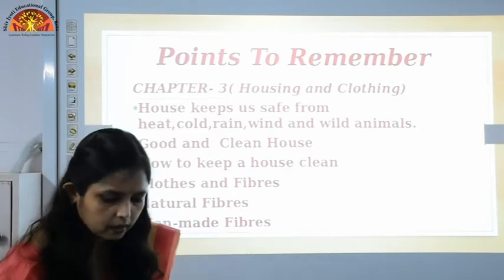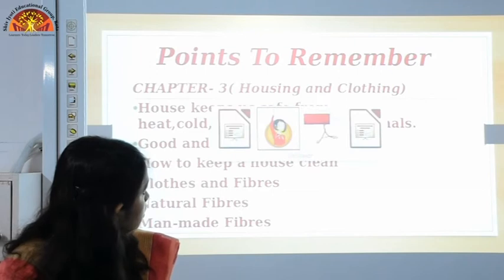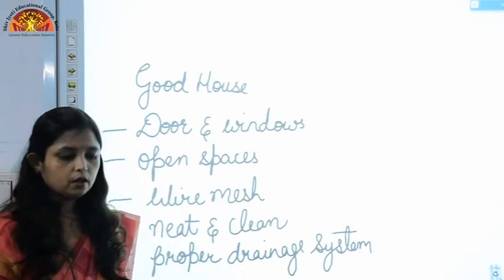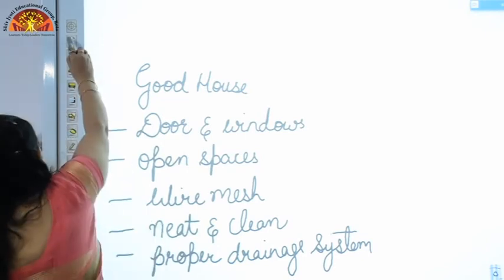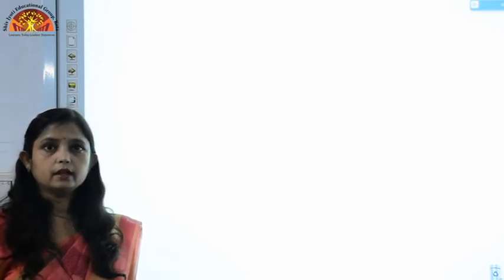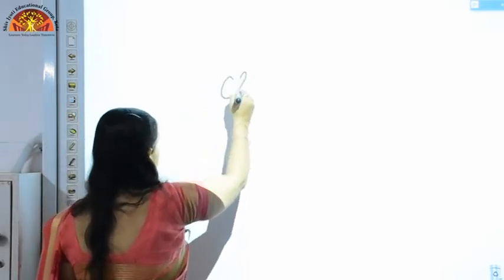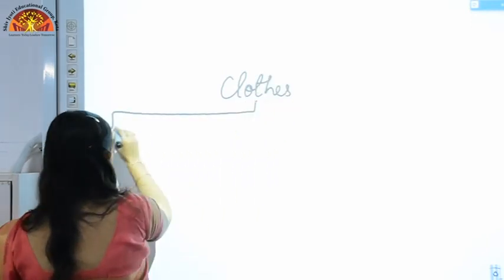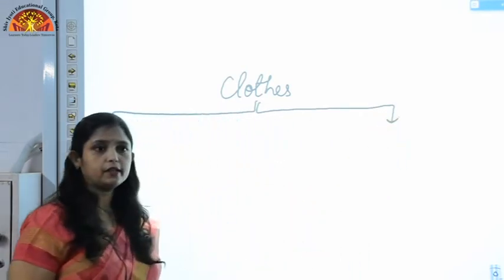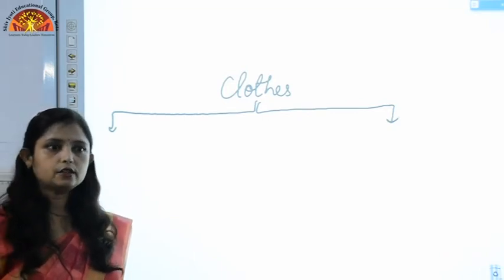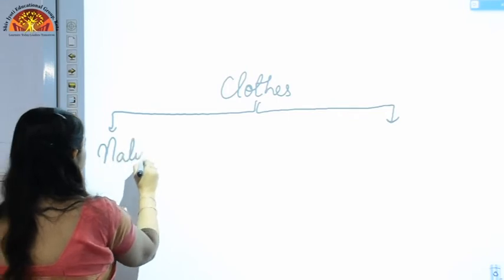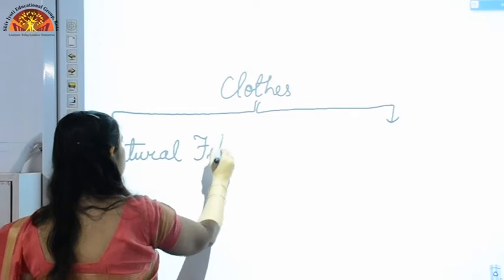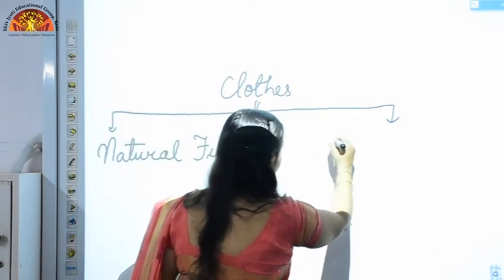Now we move to the next topic — clothes and fibers. Just like a house, clothes also protect us from heat, cold, rain, and insect bites. Clothes are made up of thin thread-like structures called fibers. Clothes are made up of two types of fibers: natural fibers and man-made fibers.